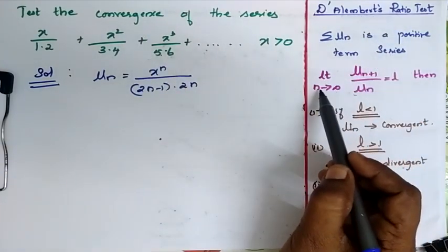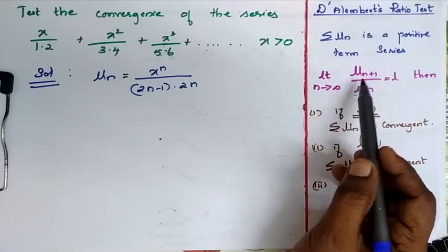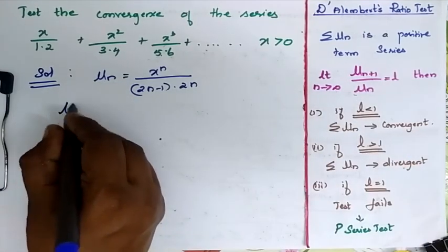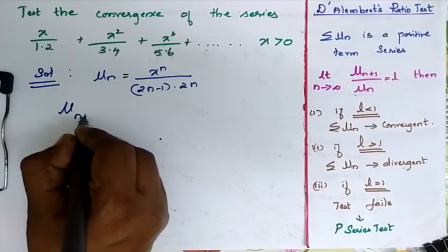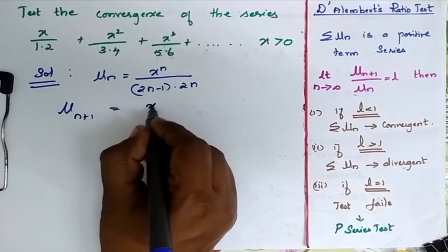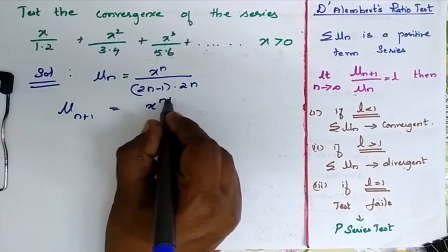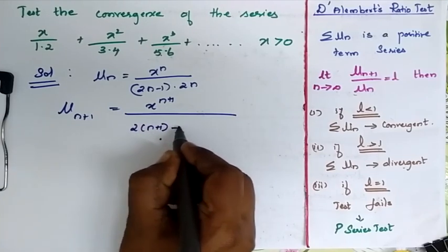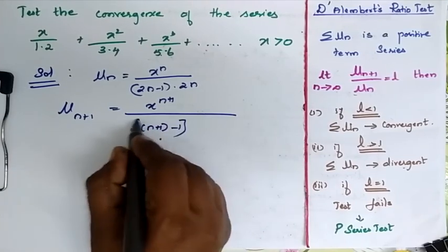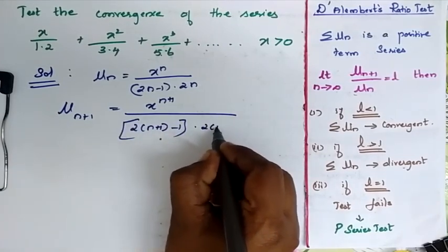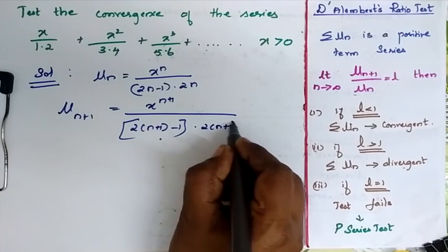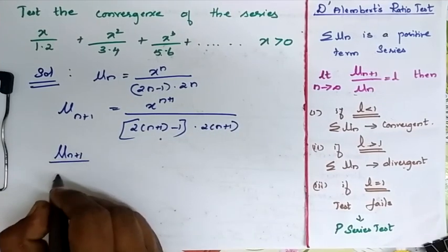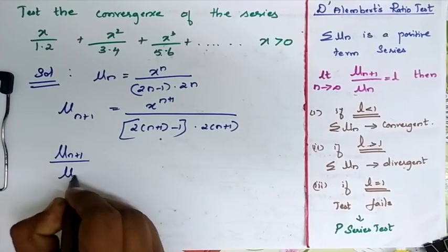I have to find the limit as n tends to infinity of un+1 by un. My un+1 is equal to x^(n+1) divided by 2(n+1) minus 1 into 2(n+1). So now I have to find un+1 by un.